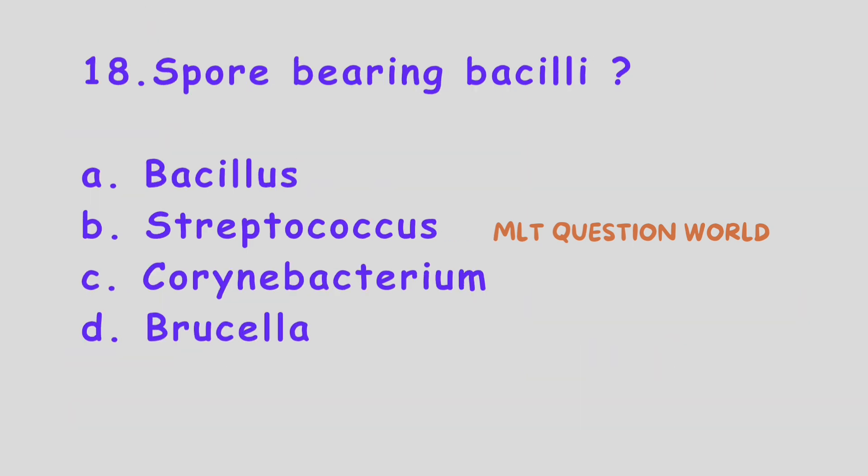Question number 18. Spore-bearing bacilli: Option A, Bacillus; Option B, Streptococcus; Option C, Corynebacterium; Option D, Brucella. Which of the following is a spore-bearing bacillus? The right answer is Option A, Bacillus. Bacillus anthracis is an example.